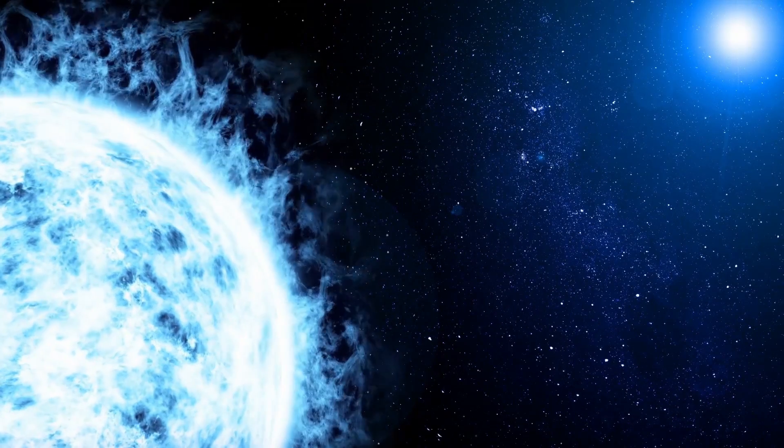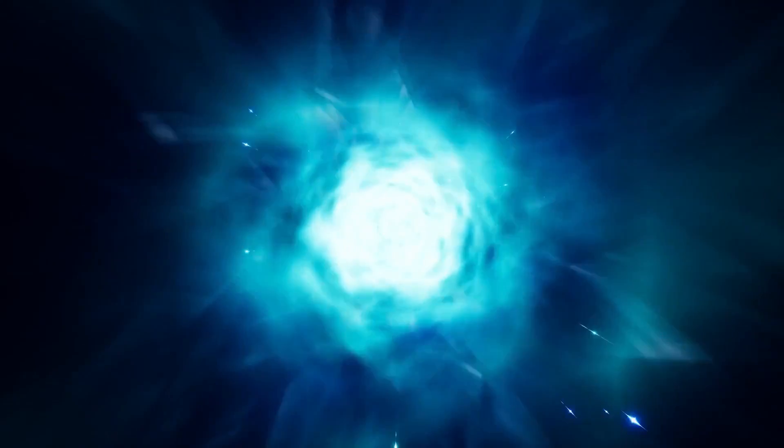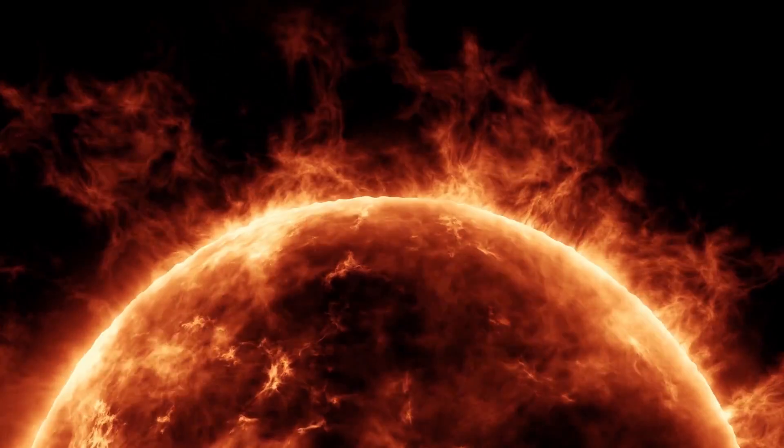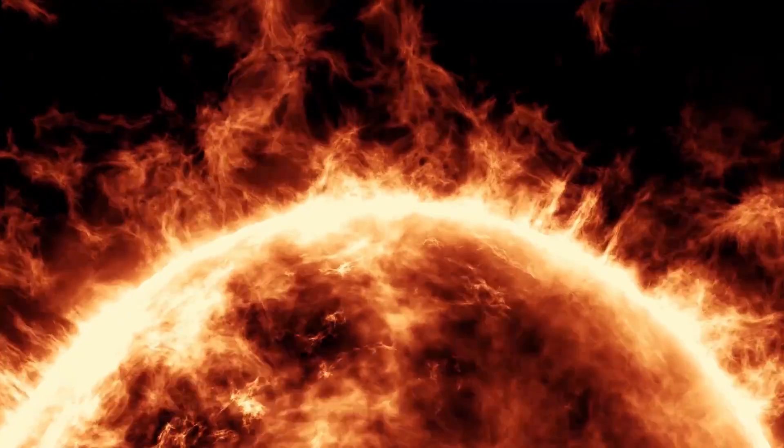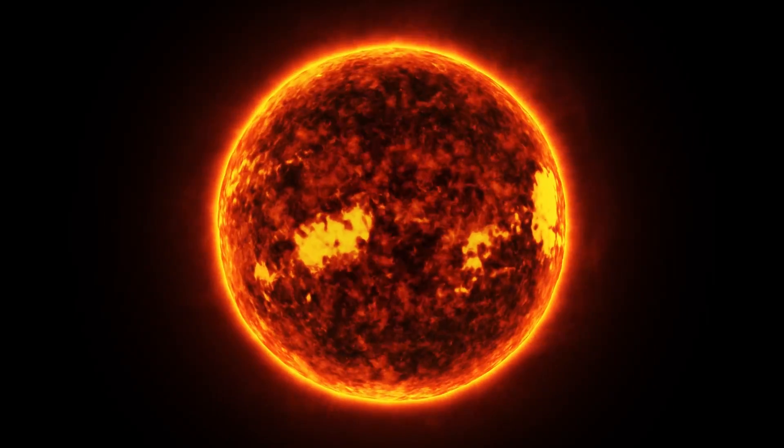When stars like our sun begin to run out of hydrogen fuel, they will swell up to many times their original size, becoming a red giant, and when the fuel is exhausted, the star will fizzle out.